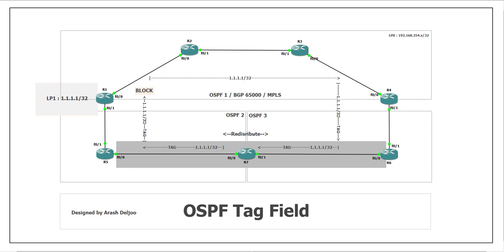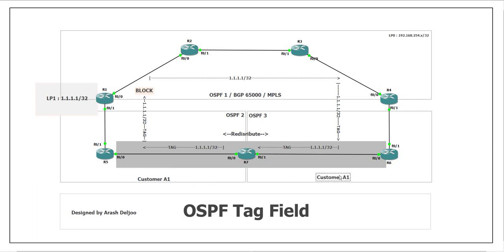In this scenario we will configure and learn the concepts, and verify the operation of the OSPF tag field. Here we have a service provider — R1, R2, R3, and R4. This service provider has one customer with two sites: Customer A Site 1 and Customer A Site 2. This means we need to configure connectivity for these two sites so they can reach each other.